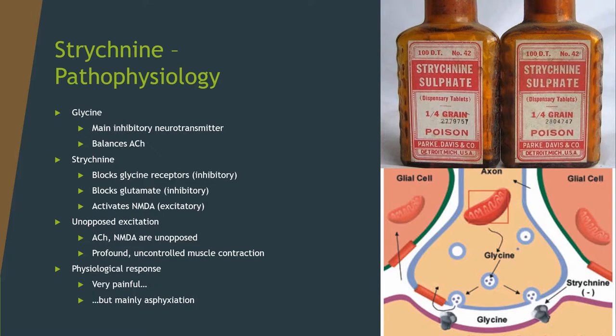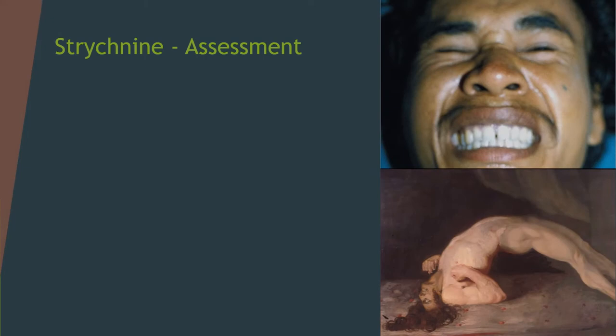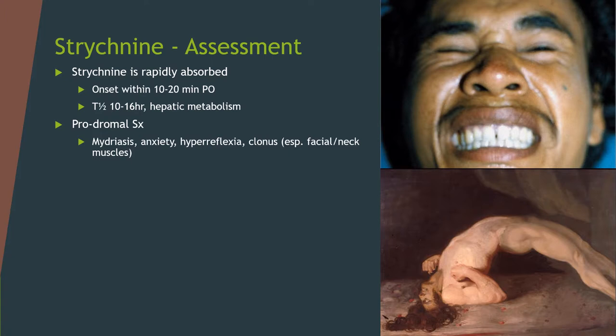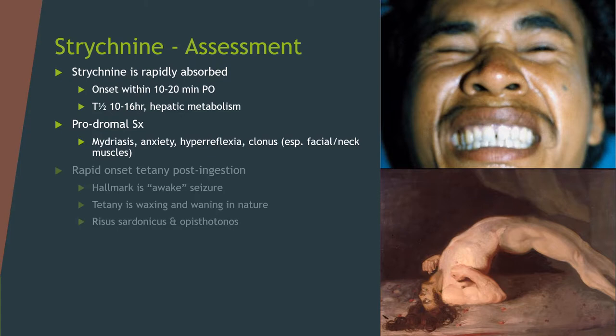The lethal dose of strychnine is generally accepted to be about 1–2 mg/kg. It is rapidly absorbed with an onset of about 10–20 minutes when taken orally, quicker if injected, and has a half-life of about 10–16 hours, metabolized via the liver. The prodromal symptoms include mydriasis (pupil dilation), anxiety, hypervigilance, hyperreflexia, clonus, and especially tightening of the facial and neck muscles.